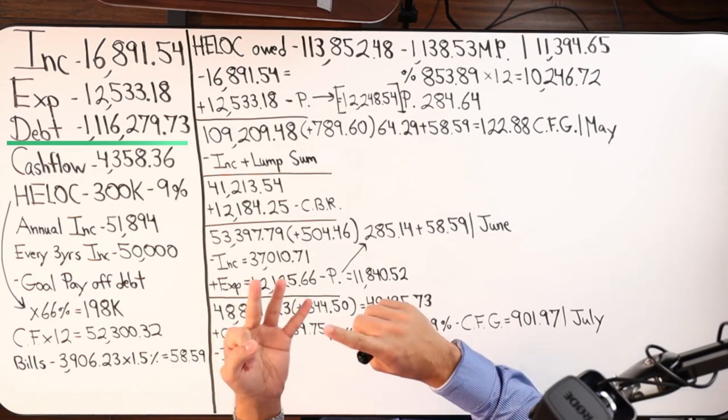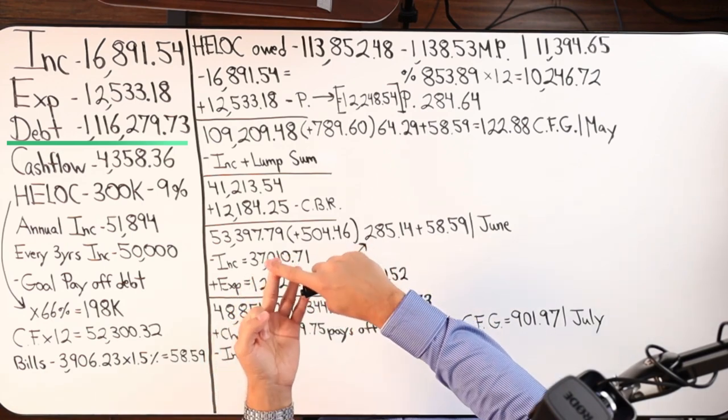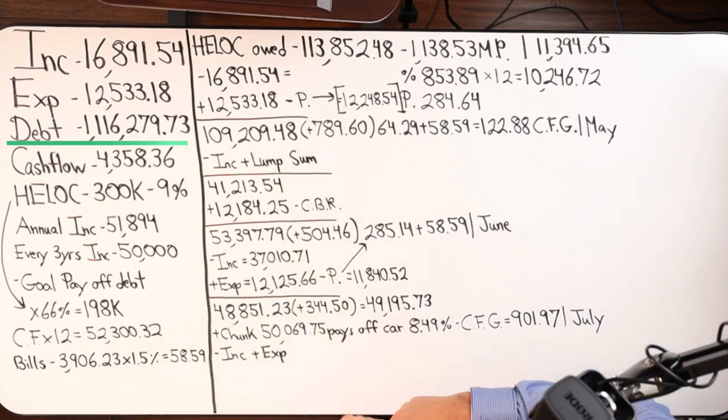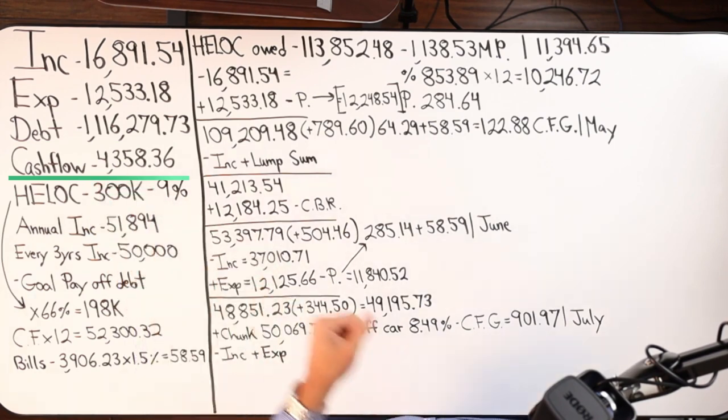So three separate debts, vehicle, car loan, home equity debt, and mortgage itself. So that's what we're dealing with. Their cashflow at the end of the month is around this number, $4,358.36. Here's our debt tool.